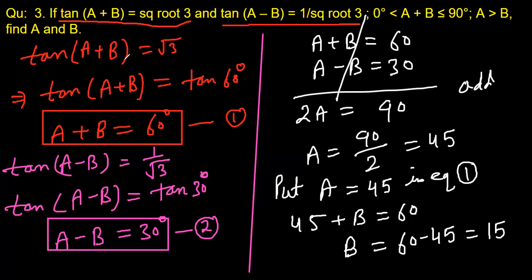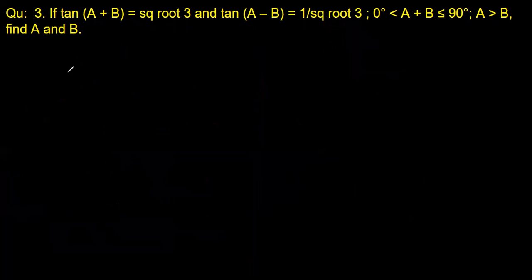We can verify these values: tan(45+15) = tan(60°) = √3, and tan(45-15) = tan(30°) = 1/√3. Both values satisfy our equations. So the final answer is a = 45° and b = 15°.